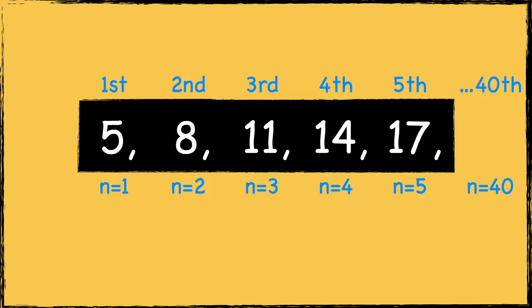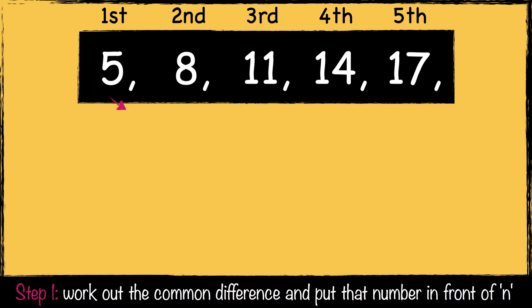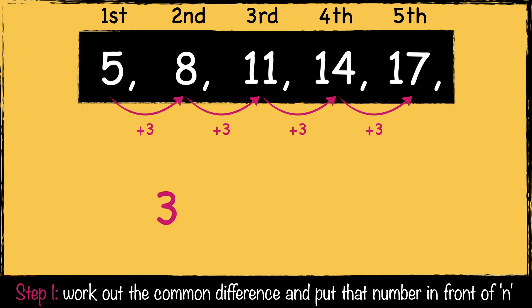So now I'm going to show you how to write an expression for the nth term. First, we need to work out the difference between each number in the sequence. In this sequence, we are adding 3 to each number. This is going to make the first part of the nth term: 3n.